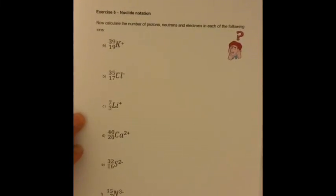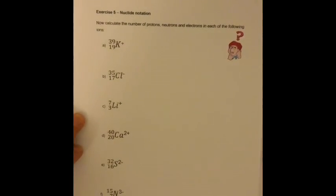Exercise 5 was on nuclear notation, and we'll introduce the idea of an ion. An ion is where an electron has either been gained or lost. If it's gained, you have a negative charge — more electrons than protons. And if it's lost, you have a positive charge — more protons than electrons.